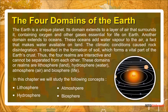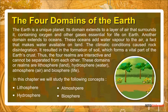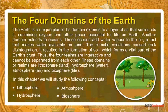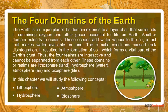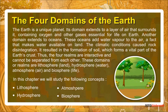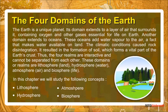The earth is a unique planet. Its domain extends to a layer of air that surrounds it, containing oxygen and other gases essential for life on earth. Another domain extends to oceans; these oceans add water vapor to the air, a fact that makes water available on land. The climatic conditions caused rock disintegration, resulting in the formation of soil, which forms a vital part of the earth's crust.